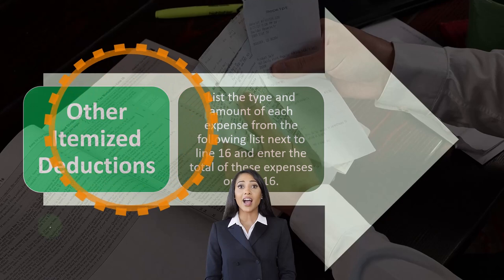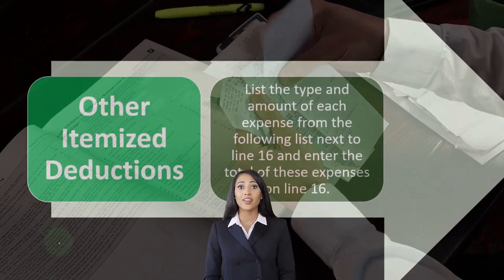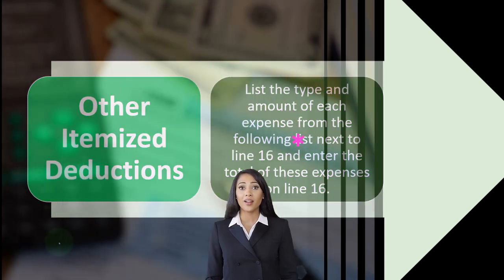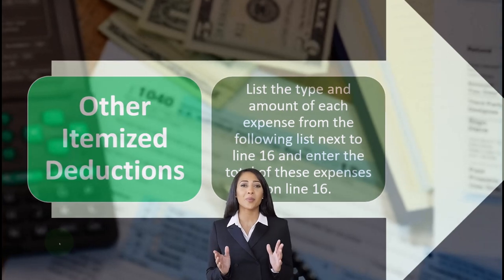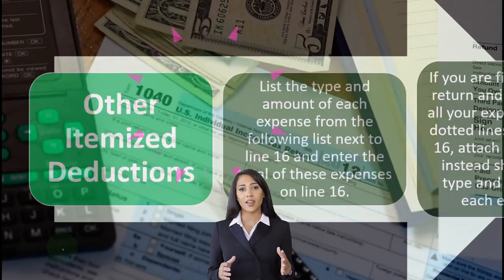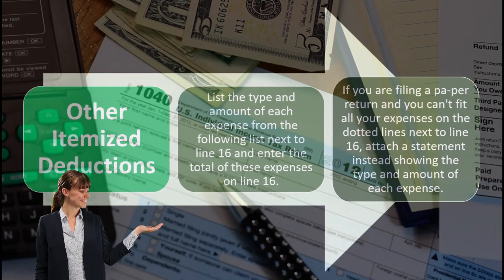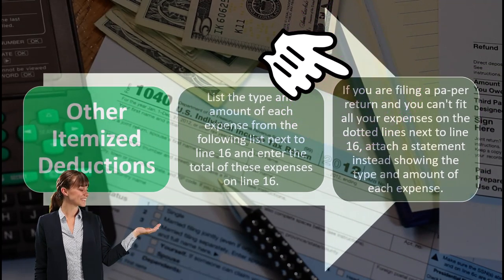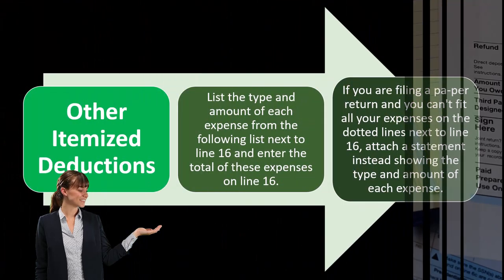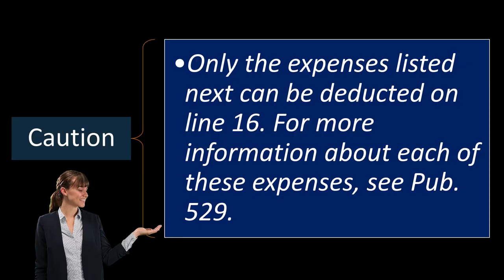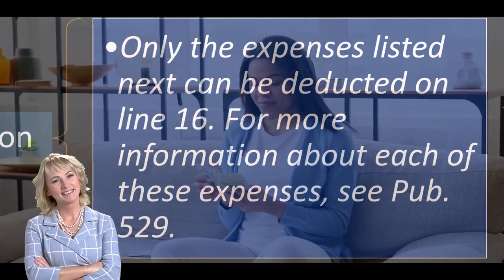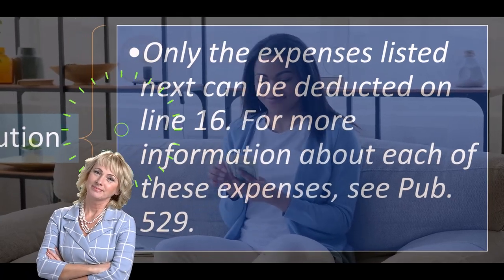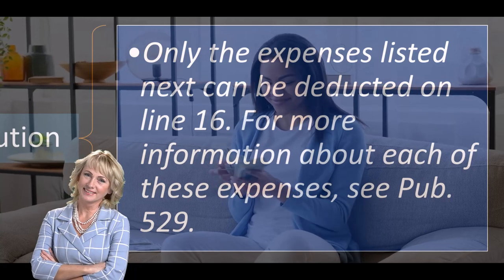If you have a net qualified disaster loss on Form 4684, line 15, and you are itemizing your deductions, list the amount from Form 4684, line 15 on the dotted line next to line 16 as 'net qualified disaster loss' and include it with your other miscellaneous deductions on line 16. Other itemized deductions: list the type and amount of each expense from the following list next to line 16 and enter the total of these expenses. Only the expenses listed can be deducted on line 16. For more information about each of these expenses, see Publication 529.